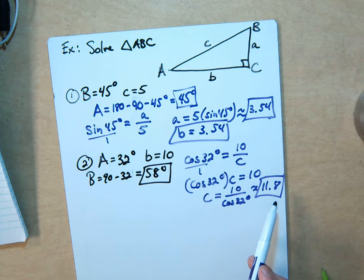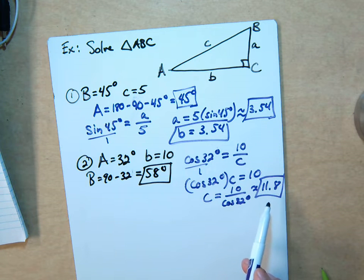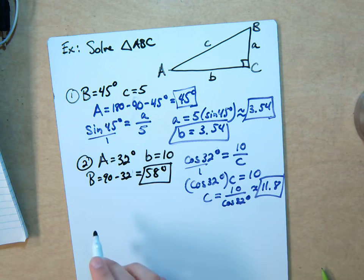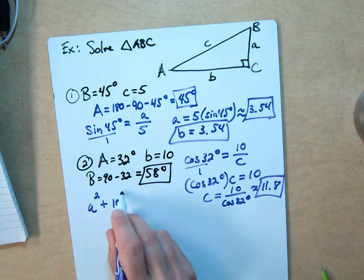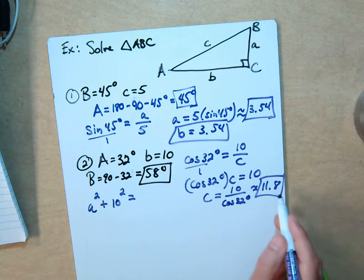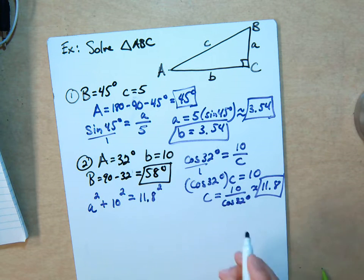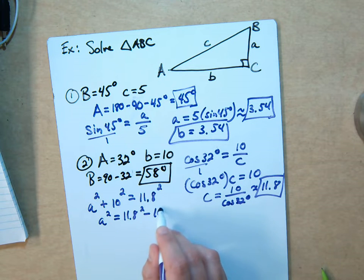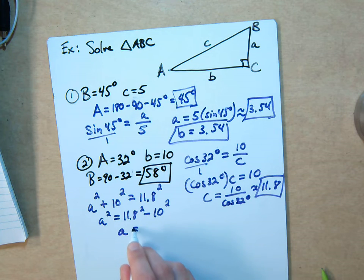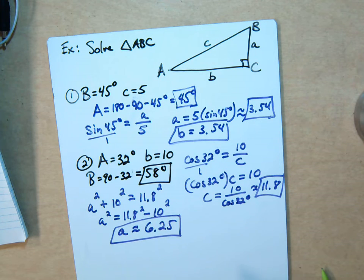And now that you know two sides, you can do SOHCAHTOA again, and you really have lots of choices for which angle you use and which sides, or you just do Pythagorean. So, for the sake of doing it differently, let's say A squared, we don't know A squared, plus B squared, 10 squared, equals C squared, which is 11.8 squared. So, we just solve A squared equals 11.8 squared minus 10 squared on our calculator, you would do that, then you would take the square root, so side A is approximately, you should get, make sure you know how to use your calculator correctly, and you should get 6.25. So, now I've found all the missing sides and angles, you don't need to say what angle C is, we know that's 90.